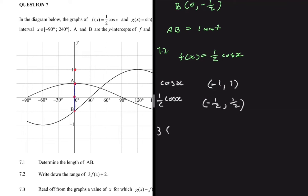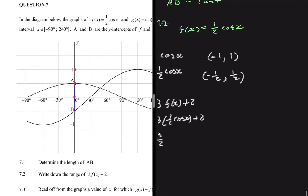In our case we have 3f(x) + 2. Substituting f(x) gives us 3·(½cos(x)) + 2, which is (3/2)cos(x) + 2. So we multiply the range of cos(x) by 3/2 and add 2. Minus 1 × (3/2) + 2 = 1/2, and 1 × (3/2) + 2 = 7/2. So the range for 7.2 is [1/2, 7/2].